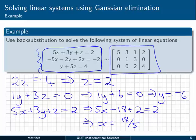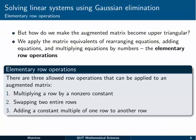That's back substitution. But it all hinged on having the augmented matrix in upper triangular form. If we just immediately convert the original set of equations into matrix form, we wouldn't have upper triangular form. So we need to figure out how to get it from an original set of equations into an augmented matrix in upper triangular form, and that's where Gaussian elimination comes in. Gaussian elimination is a process of applying elementary row operations — the matrix equivalents of rearranging equations, adding equations, and multiplying equations by numbers.